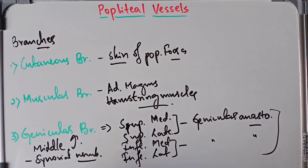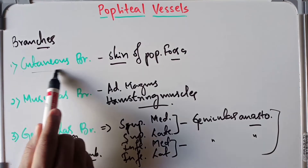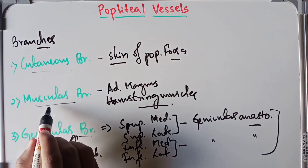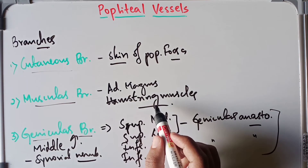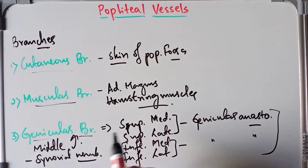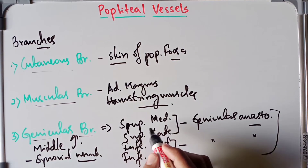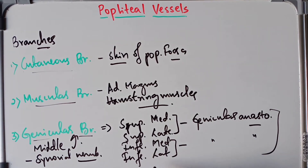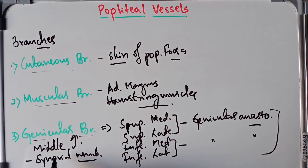To summarize the branches of the popliteal artery: it gives cutaneous branches supplying the skin of the popliteal fossa; muscular branches supplying the adductor magnus and hamstring muscles of the posterior compartment of the thigh; and genicular branches including the superior medial, superior lateral, inferior medial, and inferior lateral genicular arteries forming the genicular anastomosis, plus the middle genicular artery supplying the synovial membrane of the knee joint.